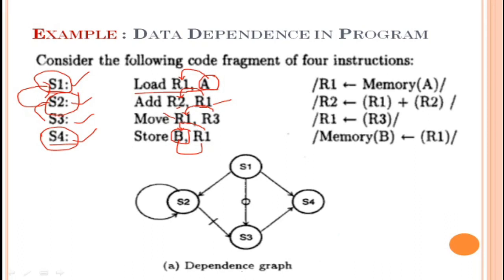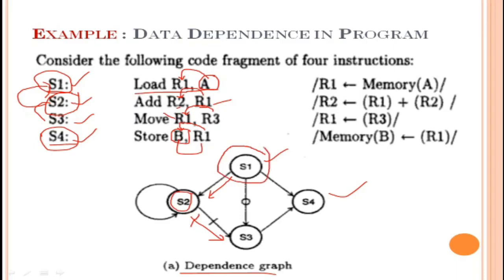We can plot this as a dependence graph. S2 is flow dependent on S1, and S3 is anti-dependent on S2, indicated with a special arrow. S1 and S4 are independent — not dependent on other statements, so they can be executed independently and are called independent statements.